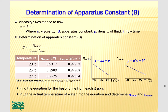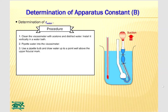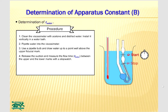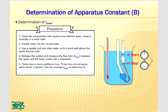Clean the viscosimeter with acetone and distilled water. Install the viscosimeter vertically in a water bath. Pipette water into the viscosimeter, use a pipette bulb and draw water up to a point well above the upper viscosimeter mark. Release the suction and measure the flow time between the upper and lower marks with a stopwatch. Obtain two or more additional runs; three runs should agree within about 1%. Use the average flow time of water to determine B. Since you have determined the viscosity and density of water and measured the flow time of water, you are now ready to determine the apparatus constant B.